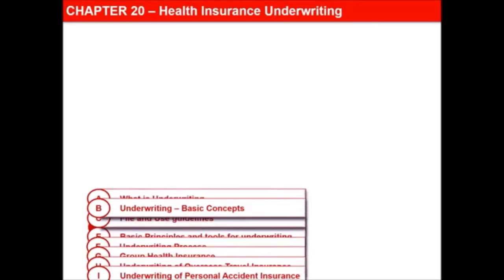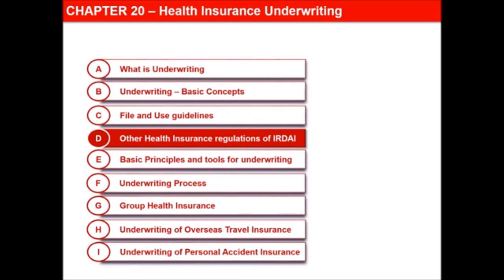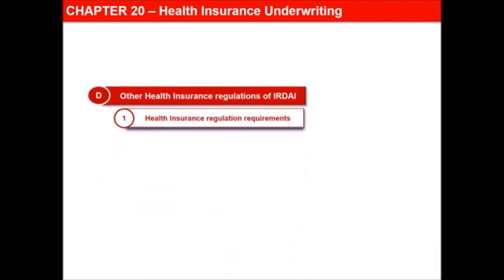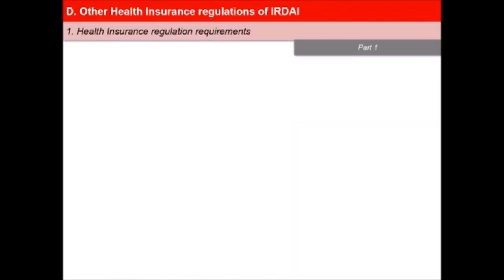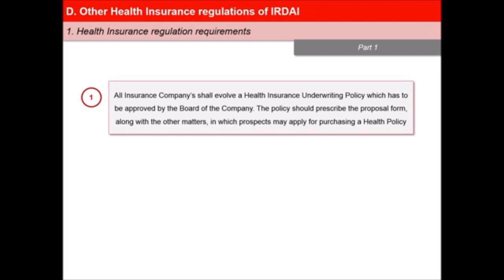In this next video of the lesson, Health Insurance Underwriting, we will learn about some other health insurance regulations of IRDAI. In addition to the file and use guidelines, the health insurance regulations also require the following. First, all insurance companies shall evolve a health insurance underwriting policy which has to be approved by the board of the company. The policy should prescribe the proposal form along with the other matters in which prospects may apply for purchasing a health policy.